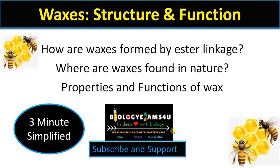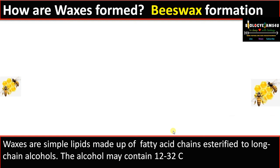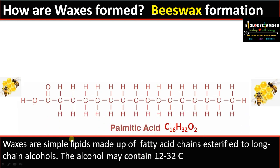Let's begin. How are waxes formed? Let's take an example — the most common wax, which is bee wax. Waxes are simple lipids made up of fatty acid chains joined to long chain alcohols by ester linkage. This is a long chain fatty acid — palmitic acid with 16 carbons. You can see this carboxyl group, the COOH group. Fatty acids are long chain hydrocarbons with a carboxyl group at one end.